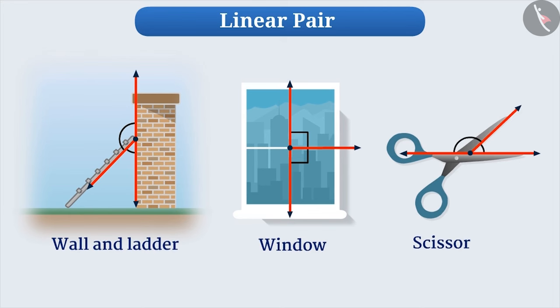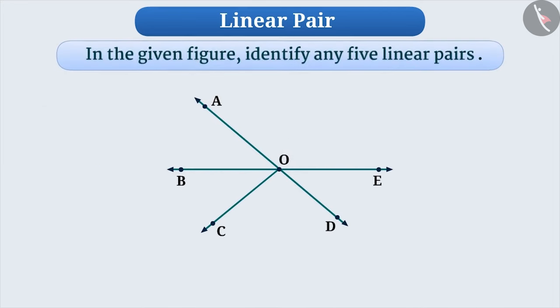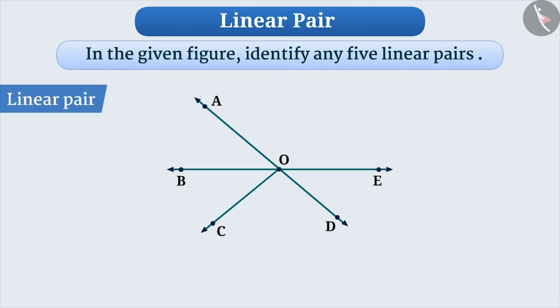Now, let's solve a question. In the given figure, identify any five linear pairs. To solve this, we will first identify the lines in the given figure. Here, AD and BE are lines. You can see that ray OB forms a linear pair at AD.